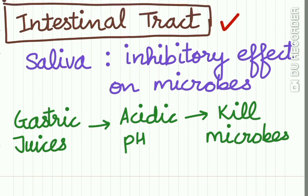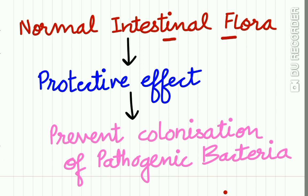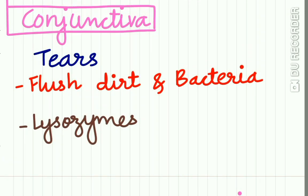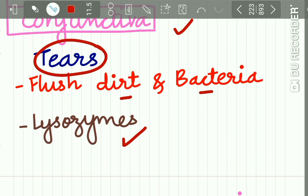In the intestinal tract, saliva present in the mouth has many inhibitory effects on microbes. The gastric juices have an acidic pH which kills microbes. The normal intestinal flora has a protective effect and prevents colonization of pathogenic bacteria. Regarding the conjunctiva, the tears present in the eyes help in flushing out dirt and bacteria, and tears also contain lysozymes which have an antibacterial effect.